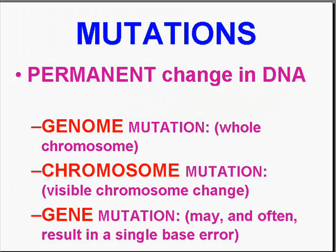Let's talk about mutations, because we know that DNA mutates. The classical types of mutations which result in patterns we call diseases can be of three types. They could be genome mutations, which involve problems regarding a whole chromosome — for example, lack of one or an extra one. Chromosome mutations are usually visible through routine types of chromosome banding, and are more in the realm of deletions, translocations — things that happen on individual chromosomes.